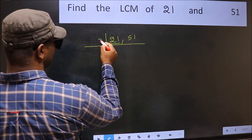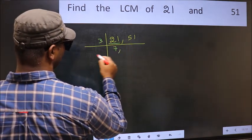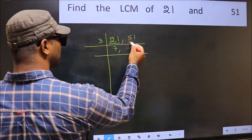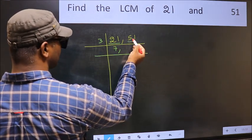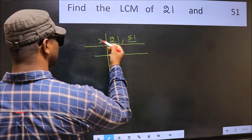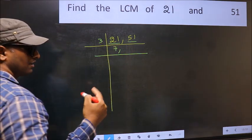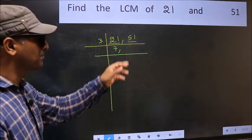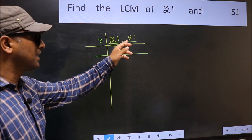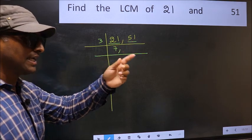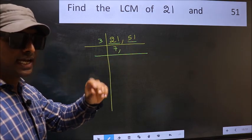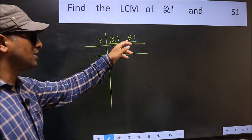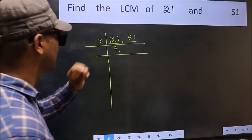21 is 3 times 7, which equals 21. For the other number 51, check whether 51 is divisible by 3 or not. For that, add the digits: 5 plus 1 gives 6, and 6 is divisible by 3. So this number is also divisible by 3.